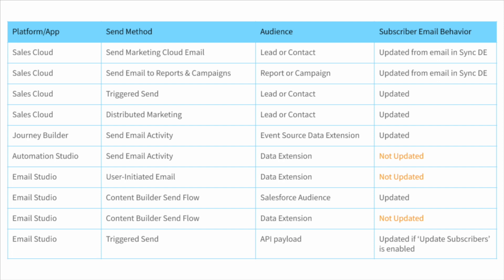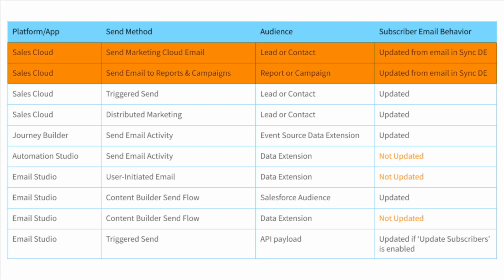The following table indicates the behavior when an email address is updated on the All Subscribers list and when it's not. In the first two scenarios where the send is initiated from Sales Cloud, the email address in the All Subscribers list will be updated at send time based on the current email address for the lead or contact in the synchronized data extension. You need to ensure that the synchronization interval is sufficient to allow for any email address changes on lead or contact records to be reflected in Marketing Cloud — by default, this is every 15 minutes.